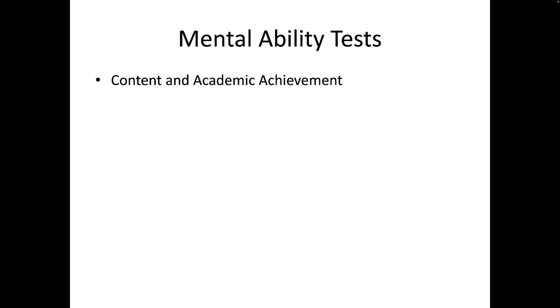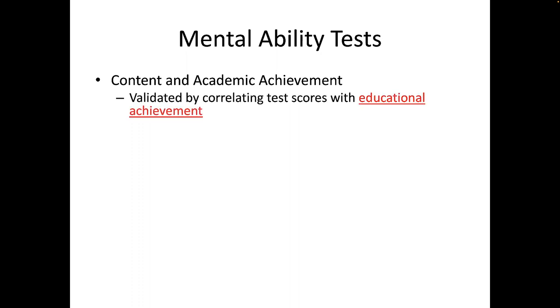Mental ability tests can be better understood by discussing three basic points. The first point pertains to the relationship between the content of early mental ability tests and academic achievement. In the past, these tests have been validated by correlating test scores with educational achievement used as the criterion. It was assumed that educational attainment should be related to mental ability, because people with higher mental ability should be more successful in school — in other words, they have greater ability to learn in formal education and training situations.